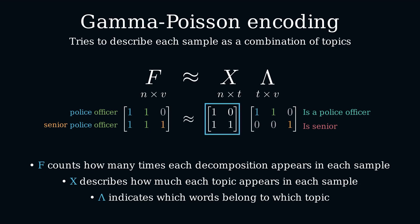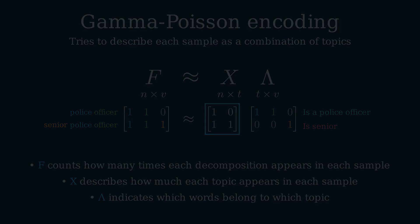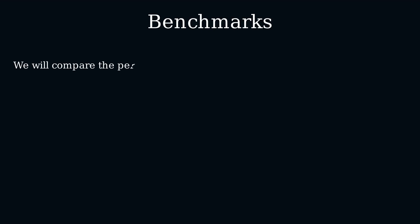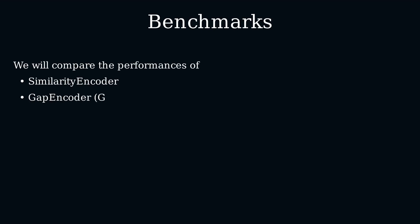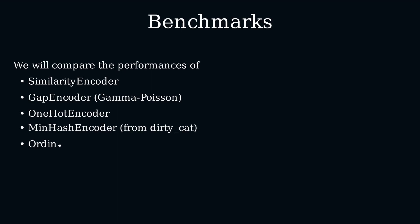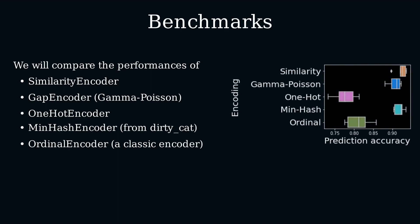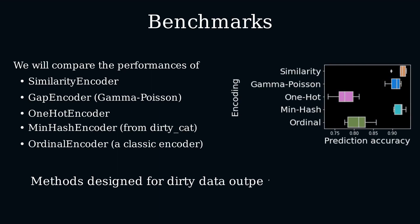We can then use x to find the topics from the dataset. To convince us that these encoding methods help achieve better results on real-world dirty data, let us perform a few benchmarks. We compare the three methods discussed on the dataset about employee salaries, along with two additional encoders. From this graph, we can see that the methods designed for dirty data outperformed the classical ones, with the similarity encoder ahead of the competition.